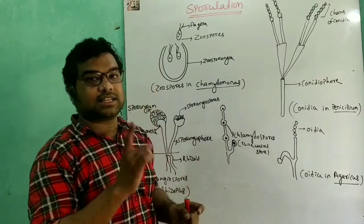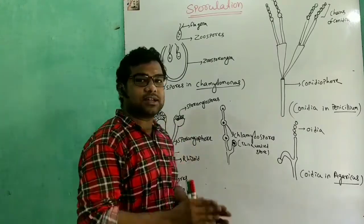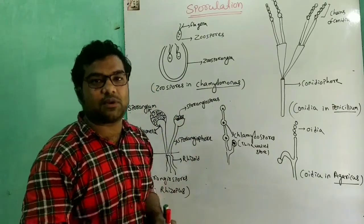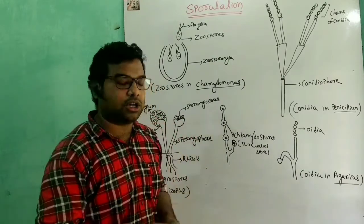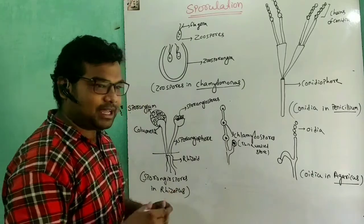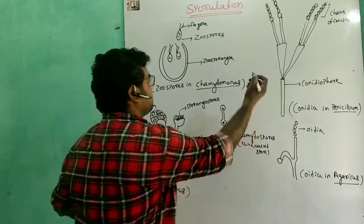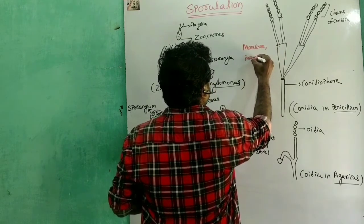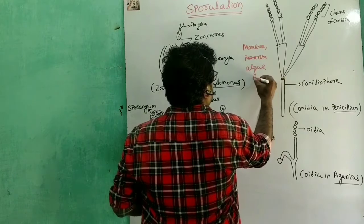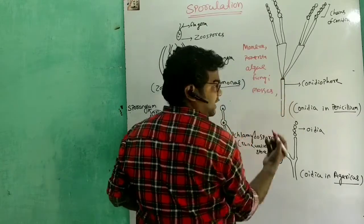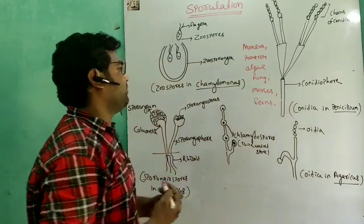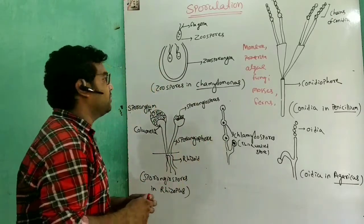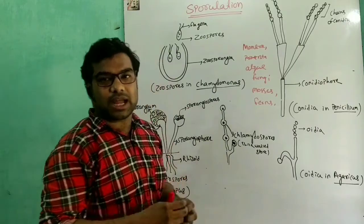If there is a small unicellular, single-cell body, it is called a spore. These spores are detached from the parent body and grow into new organisms under favorable conditions. The form of spore may be motile or non-motile.